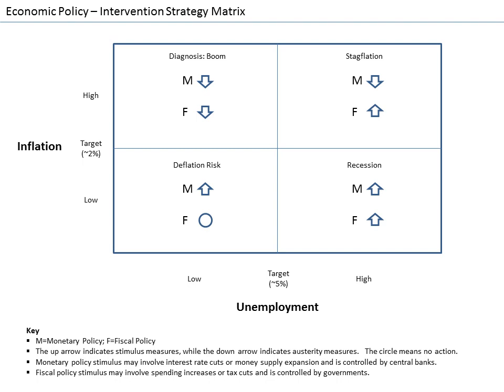Friedman and Edmund Phelps proposed an augmented version of the Phillips curve that excluded the possibility of a stable, long-run trade-off between inflation and unemployment. When the oil shocks of the 1970s created high unemployment and high inflation, Friedman and Phelps were vindicated. Monetarism was particularly influential in the early 1980s, but fell out of favor when central banks found it difficult to target money supply instead of interest rates. Monetarism also became politically unpopular when central banks created recessions in order to slow inflation.